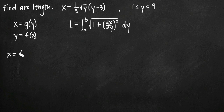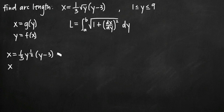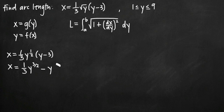We'll change the square root of y to y to the one-half, so we have one-third times y to the one-half times y minus 3. Multiplying one term at a time: one-third times y to the one-half times y gives y to the three-halves, and one-third times y to the one-half times negative 3 — the threes cancel — leaves just negative y to the one-half. So our simplified function is x equals one-third y to the three-halves minus y to the one-half.